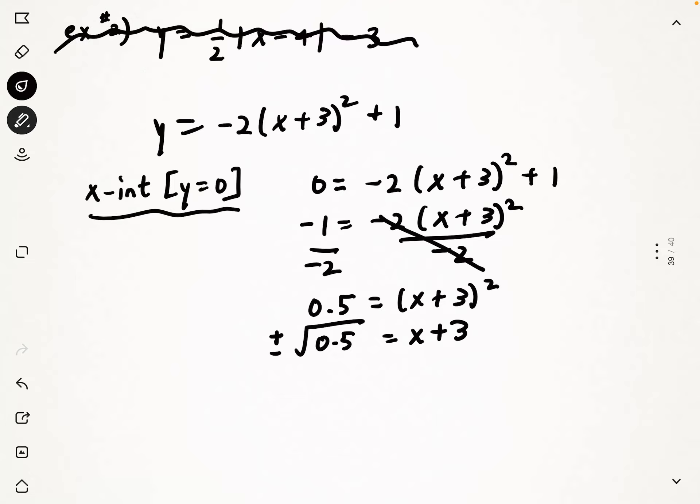It basically means that if you were to go backwards, if you were to square both sides, you would get positive 0.5, whether it's negative or positive. And then from there, you're going to bring over the minus three.